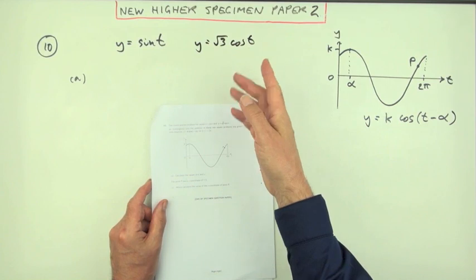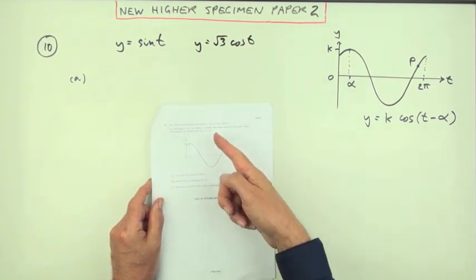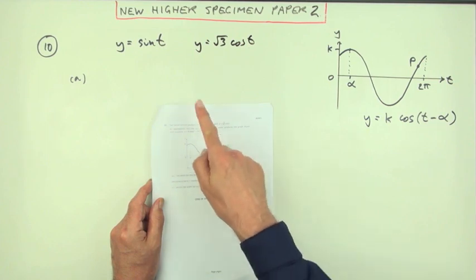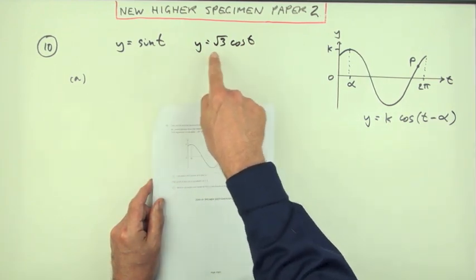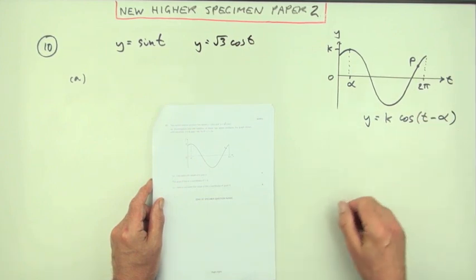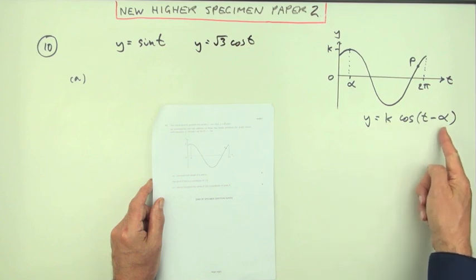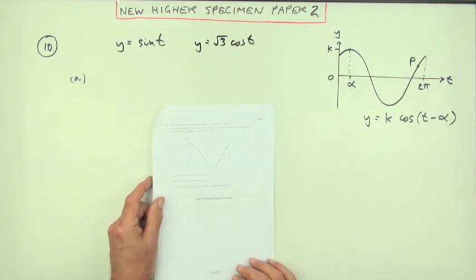Number 10, the last question in this specimen paper for the new Higher paper 2. We've got the wave equation. These two waves when added together produce this new single wave with the equation in this form. You have to find the values of k and alpha. That's the first part for four marks.